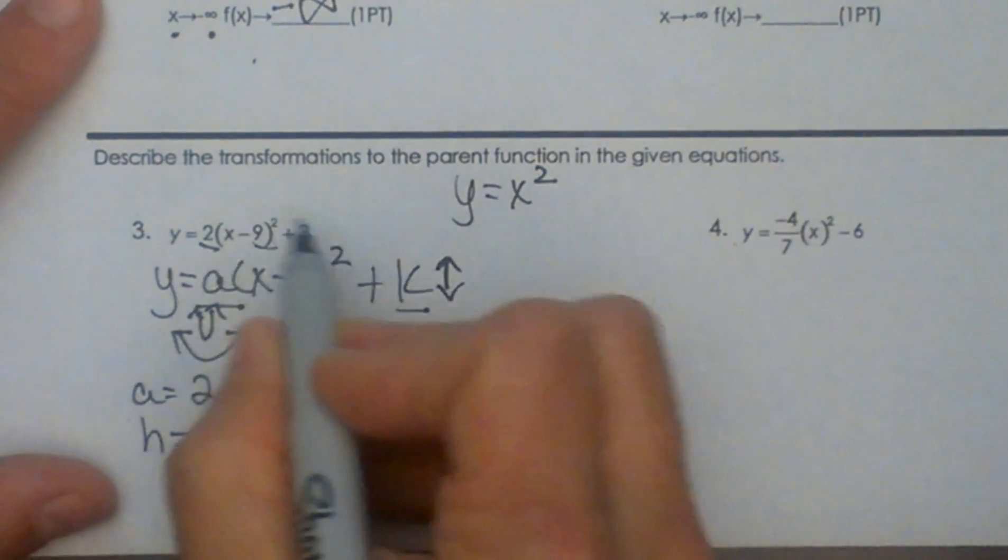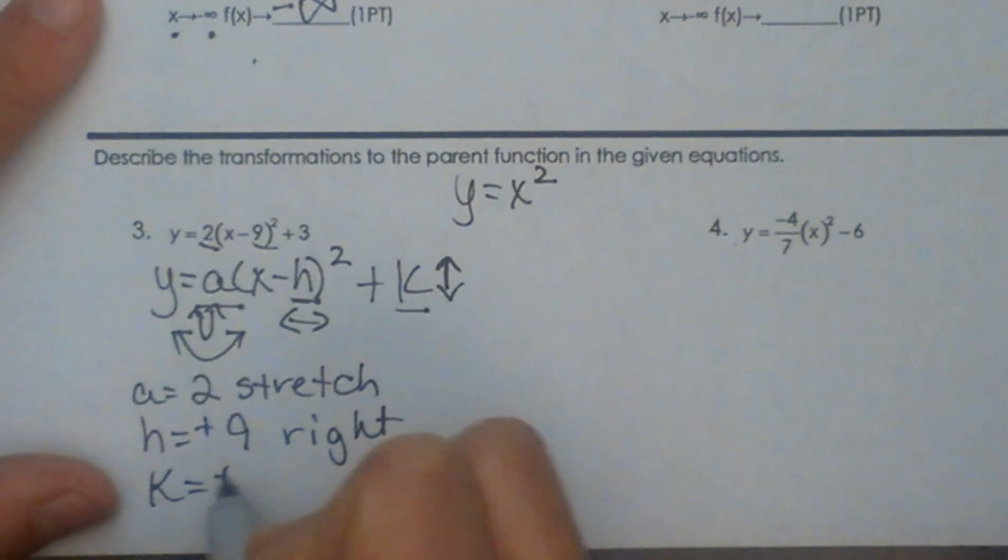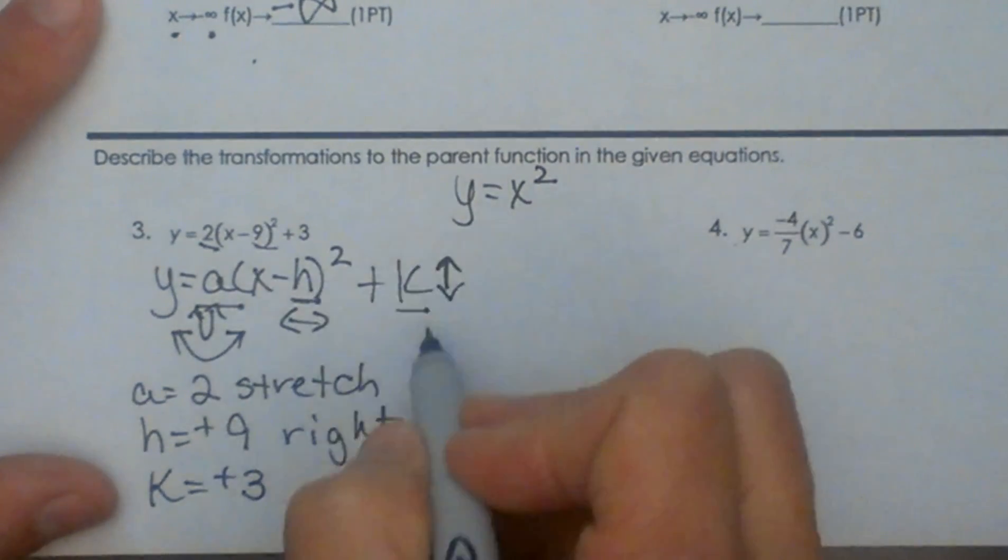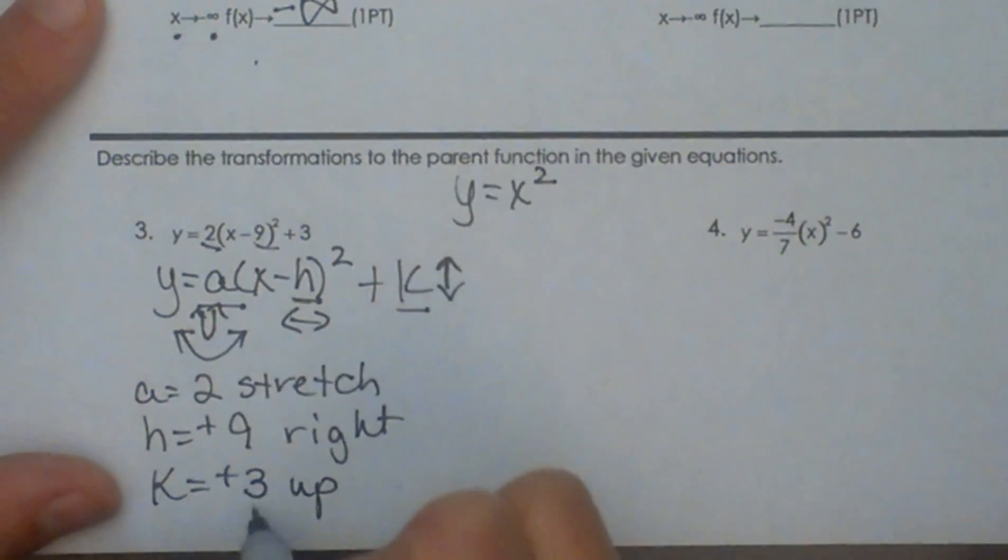And then the vertical shift, it keeps the same sign, so it's a positive 3. And that's a vertical shift, so that means I am going up by the value of 3.